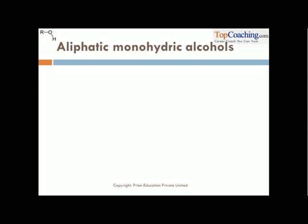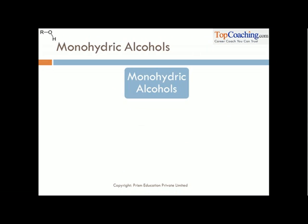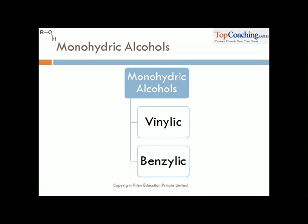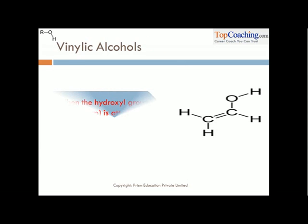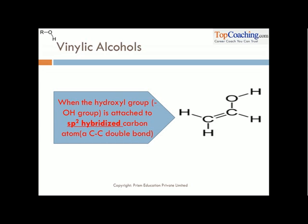First and foremost, aliphatic monohydric alcohols. These alcohols are further classified into vinylic and benzylic. Coming to vinylic alcohols: whenever the H atom of a hydrocarbon is replaced by an OH group we get an alcohol, and that hydrocarbon can be an alkene. When the hydroxyl group is attached to an sp2 hybridized carbon — which occurs when there is a carbon-carbon double bond — we get vinylic alcohols.